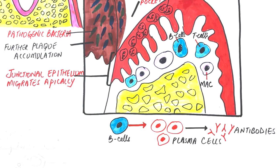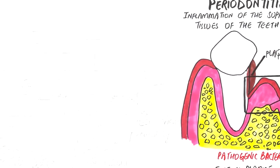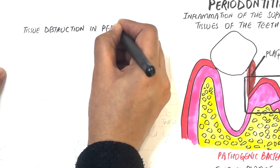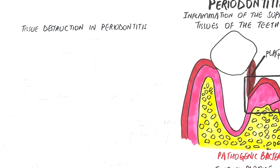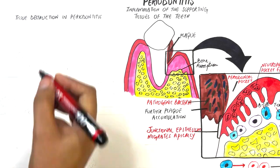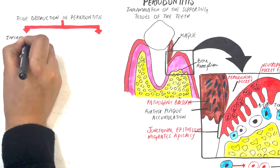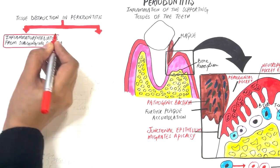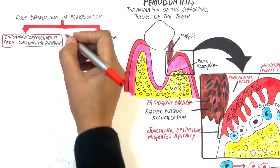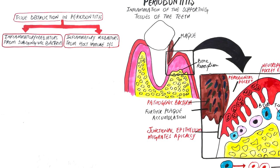The tissue destruction in periodontitis results from two main sources: the inflammatory mediators derived from subgingival microbes, and those derived from the host immune response. Although the presence of bacteria within the dental plaque is important to initiate an inflammatory response, the majority of tissue destruction results from the severe immune response of the host itself.